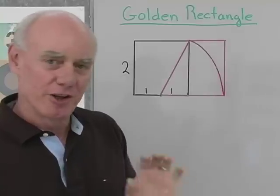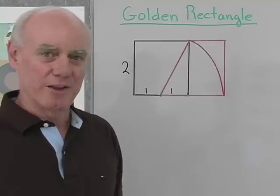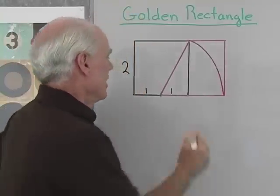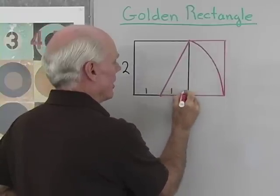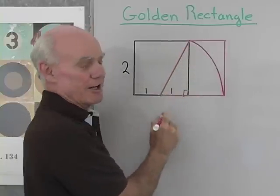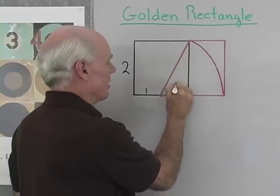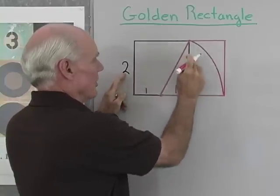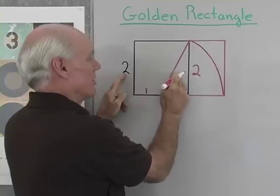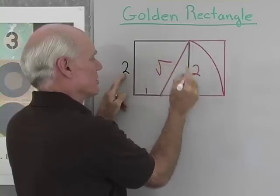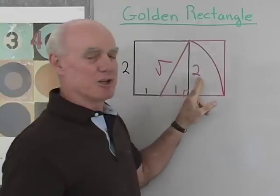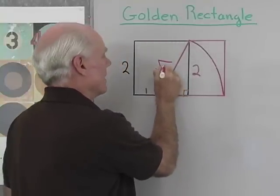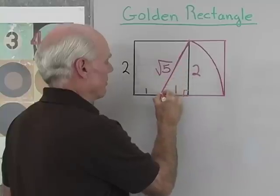What I want to do is find the ratio of the length to width in the golden rectangle, because in mathematics that's a very special number. If I look at this little right triangle, I see that this side is 1 and this side is 2, because that was my original square. So by the Pythagorean theorem, this side is going to be the square root of 1 squared plus 2 squared — square root of 1 plus 4, or square root of 5.